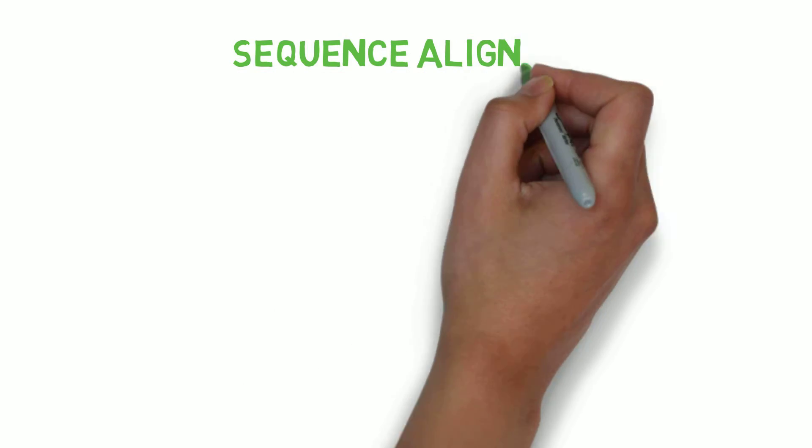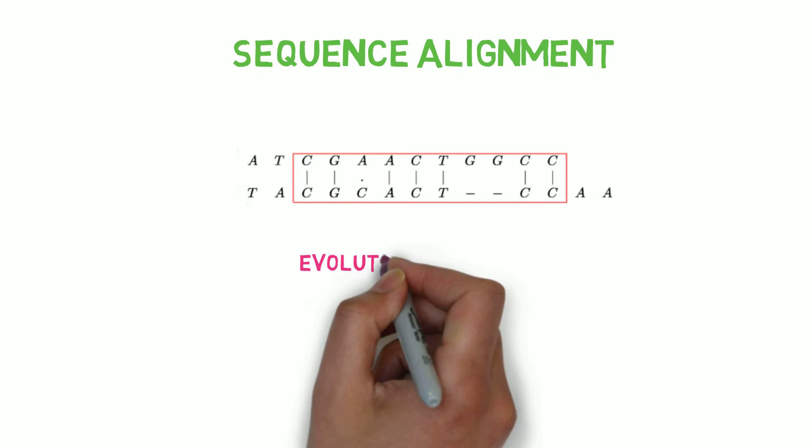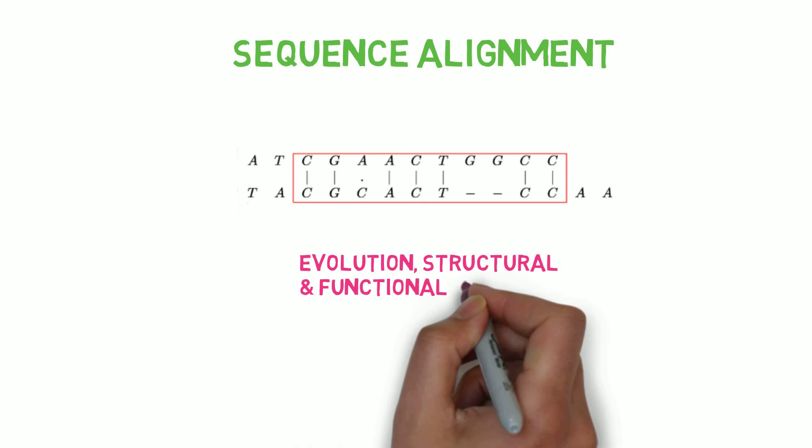The most important procedure is the alignment of a biological sequence. Finding the similarities and differences between two sequences is the main goal of this. That could be the result of structural and functional changes or evolution.